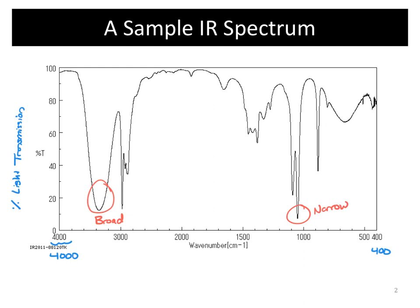Keep in mind a special cutoff around 1,500. The region from 1,500 to the right is our fingerprint region, which we usually don't use all that much. Mostly we focus on the 1,500 to 4,000 wave number range, which is our functional group region.